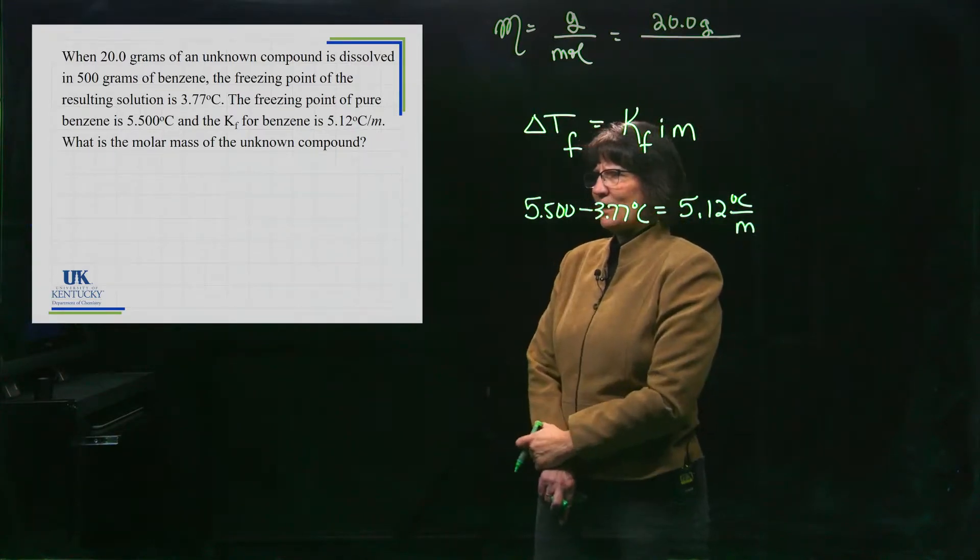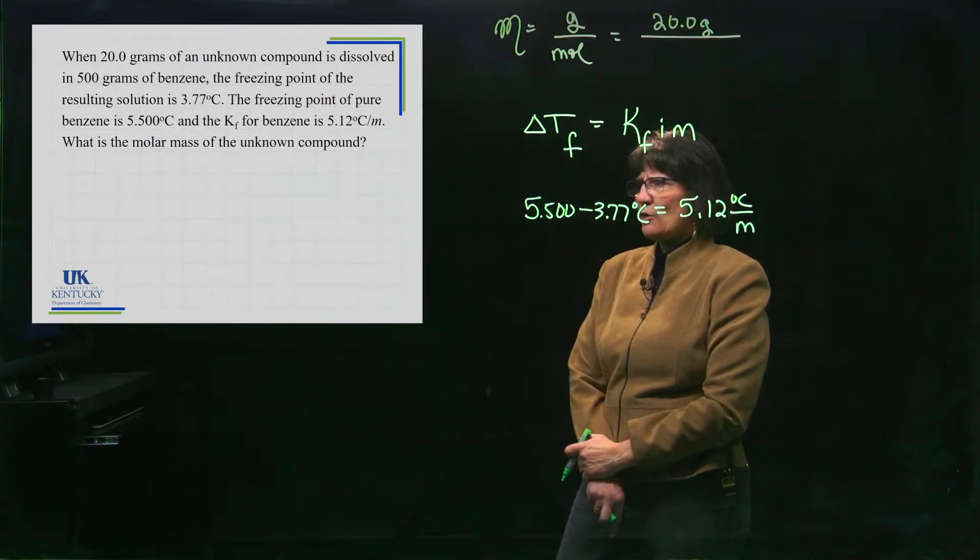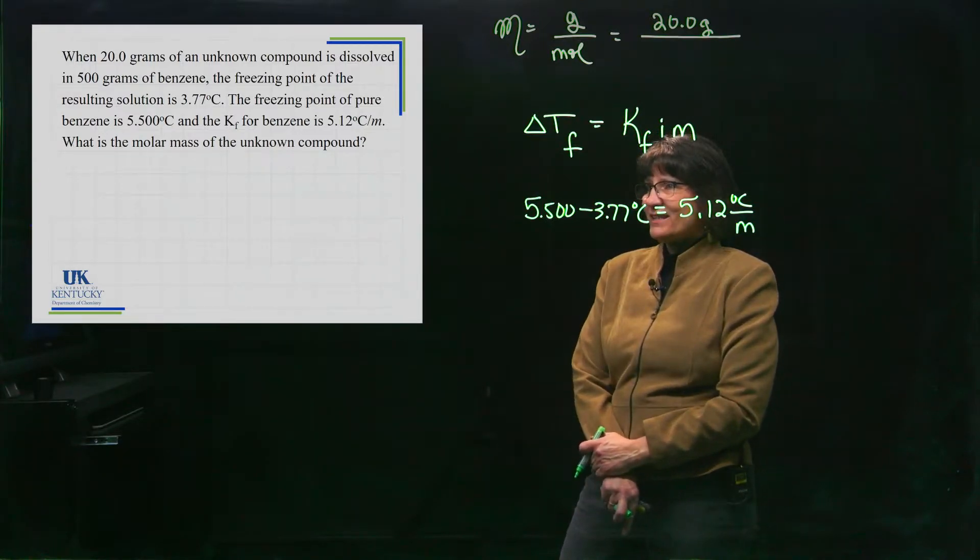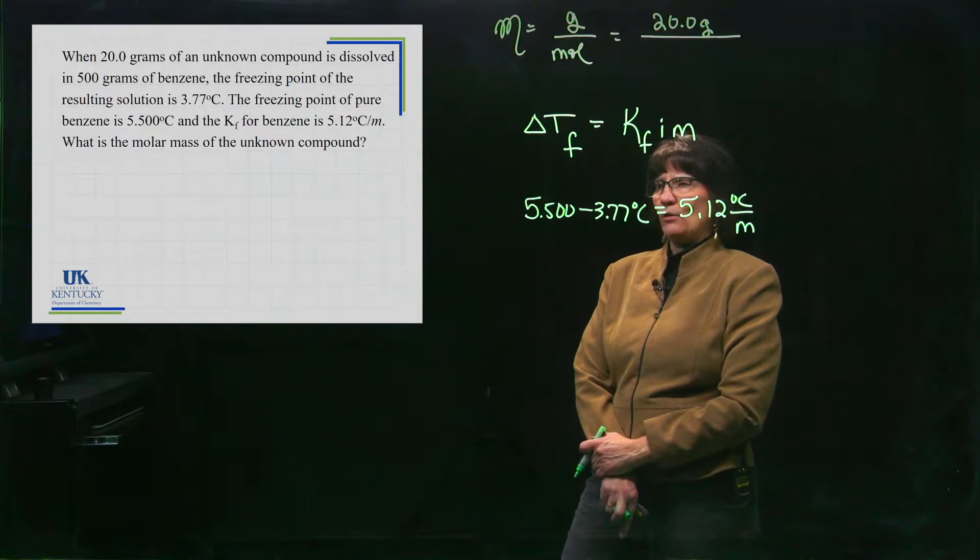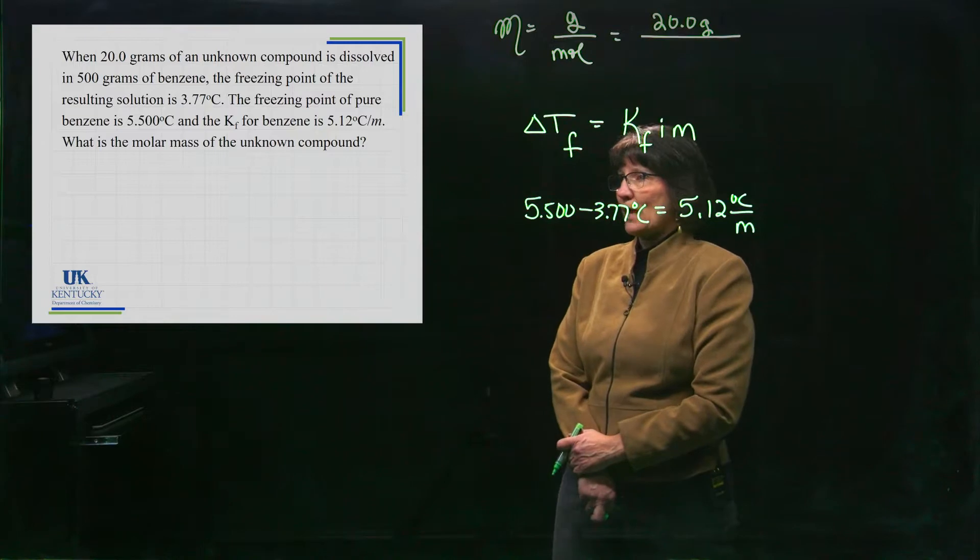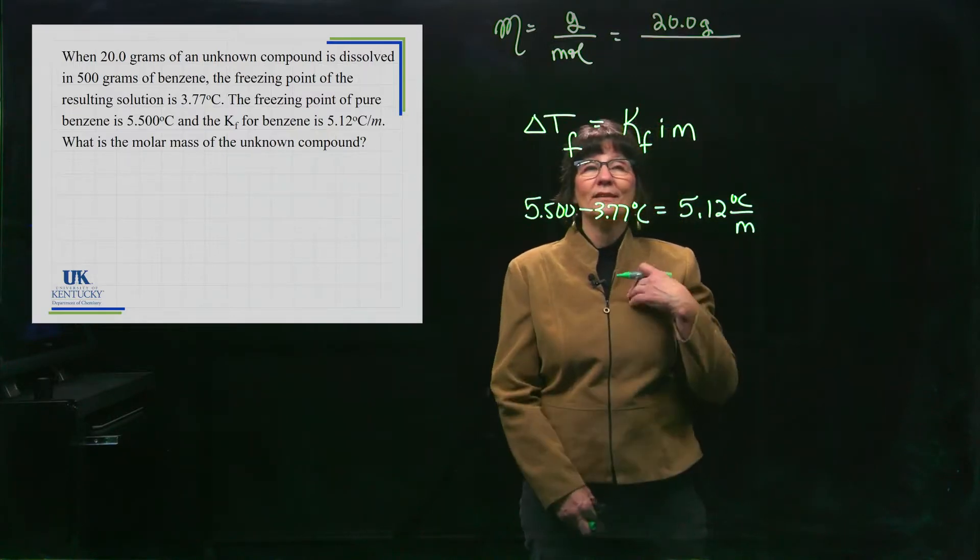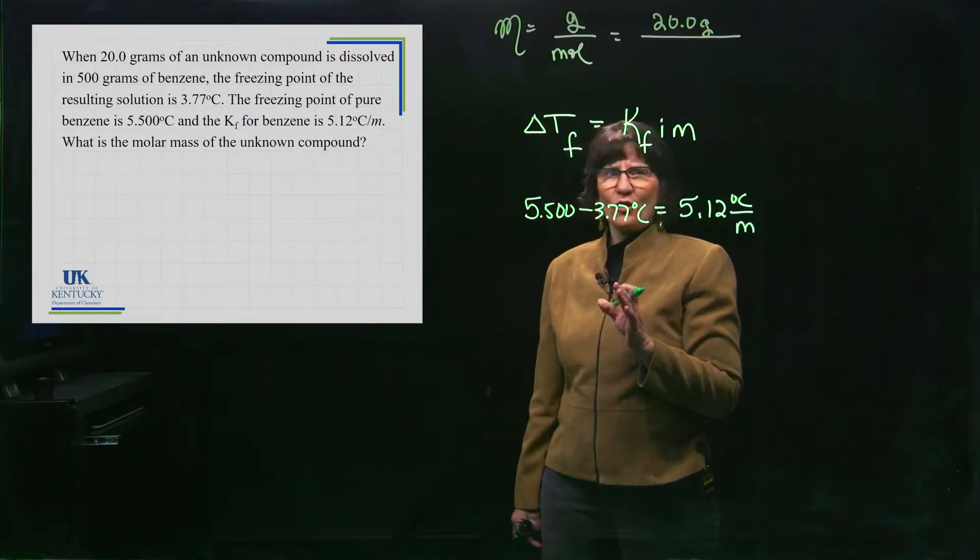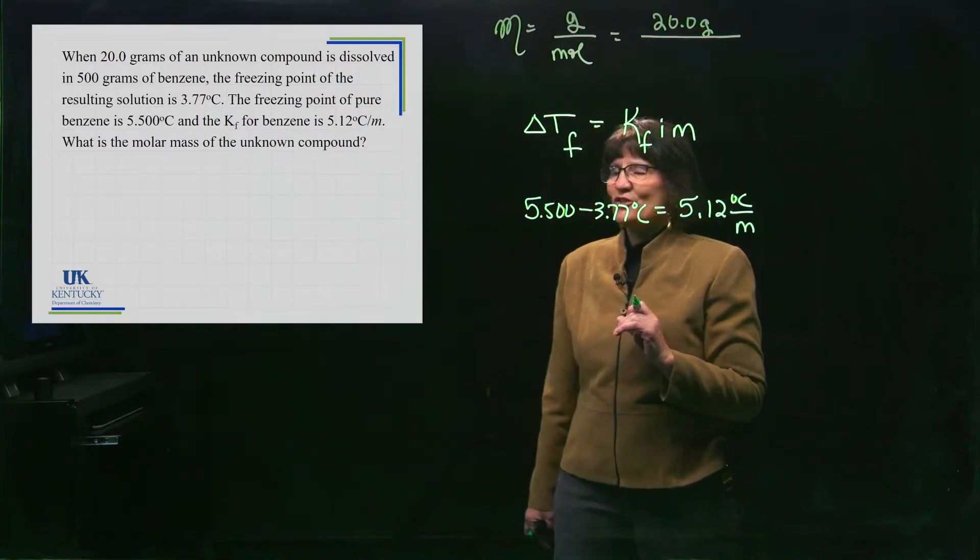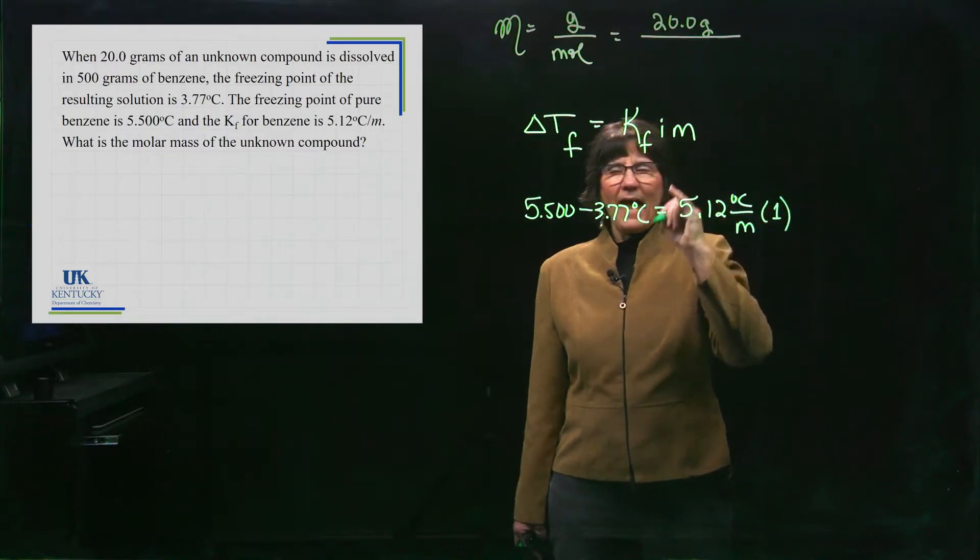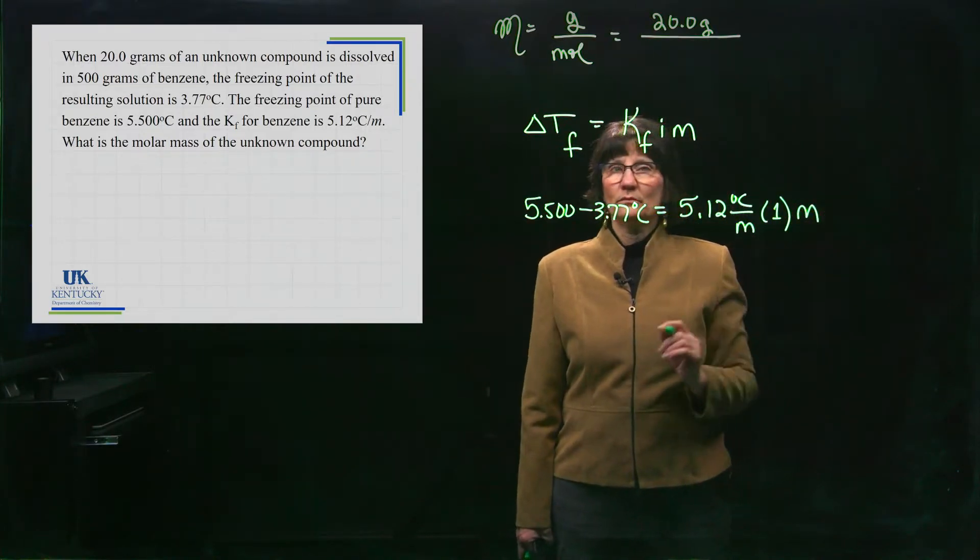I, does it say anything about it being an electrolyte? It's an unknown compound. It's dissolved in benzene. It does not, and probably if it were a problem on a test, it would say for the non-electrolyte. I know it's a non-electrolyte because I know that benzene, this is my knowledge, benzene is a non-polar solvent and you're not going to get an electrolyte to dissolve in it. So my i is going to be 1 and my molality is what I'm solving for.